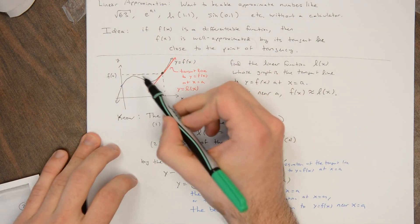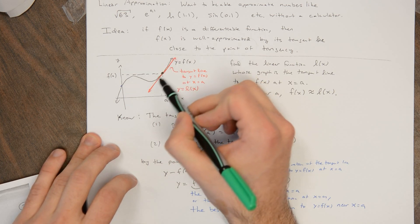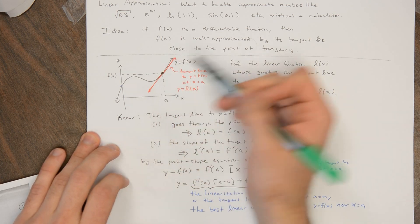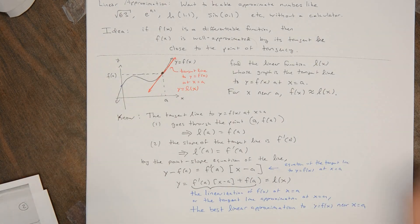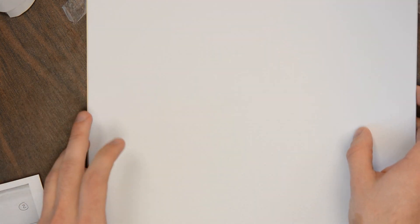I could use a parabola whose curvature could more closely match the graph of the function near this point. A whole lot of functions are going to have the same linear approximation at a point.